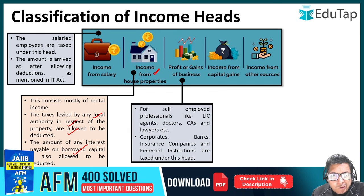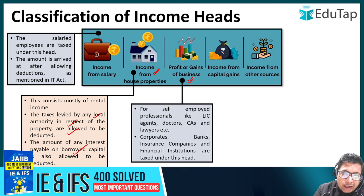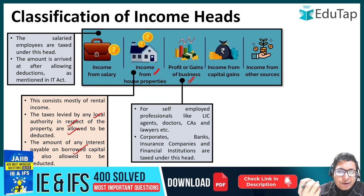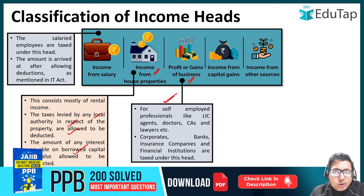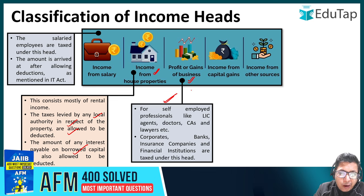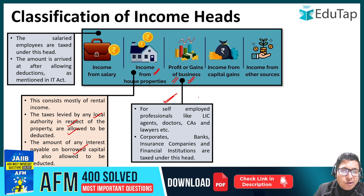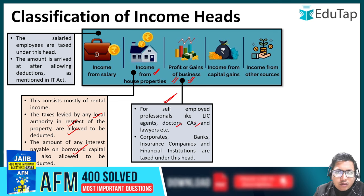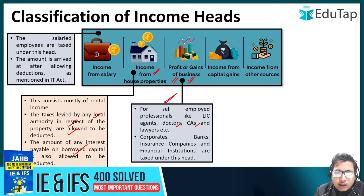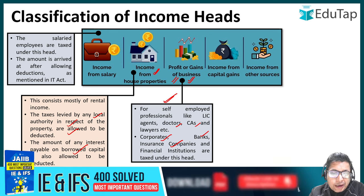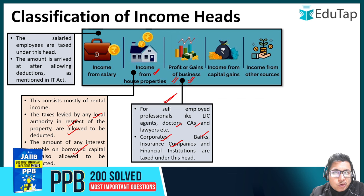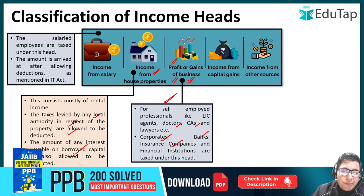Next is profits or gains from a business. Basically jab bhi aap business run karte hain ya koi profession chala rahe hain aur ussi se jo income aati hai, woh aapki income from profit or gains hoti hai. This is applicable for self-employed people like engineers, doctors, architects, or lawyers who are doing their own private practice and are not under employment of any other company or person. These self-employed professionals' income is classified as profit or gains from business. Similarly, corporates, banks, financial companies, and all other institutions incorporated under the Companies Act — they are also earning profits and the tax on their income is also considered to be a profit or gains from business.